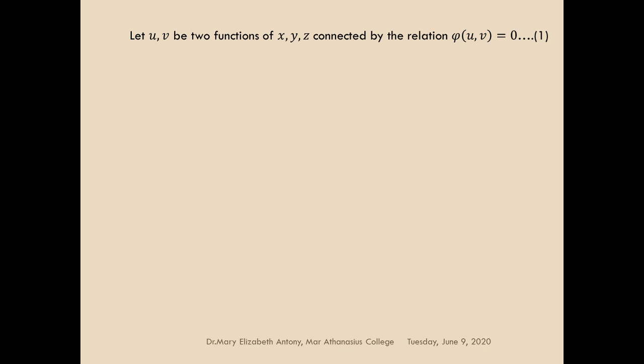Let u and v be two functions of x, y, z connected by the relation phi of u, v equal to 0. Phi is the arbitrary function here. Always remember that z is not the independent variable — z is the dependent variable; x and y are the independent variables.